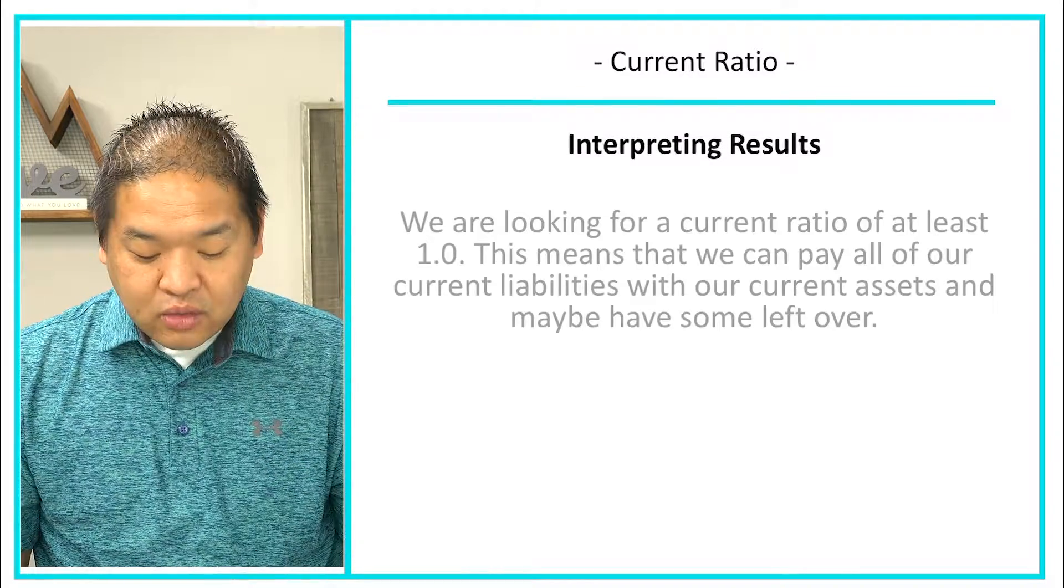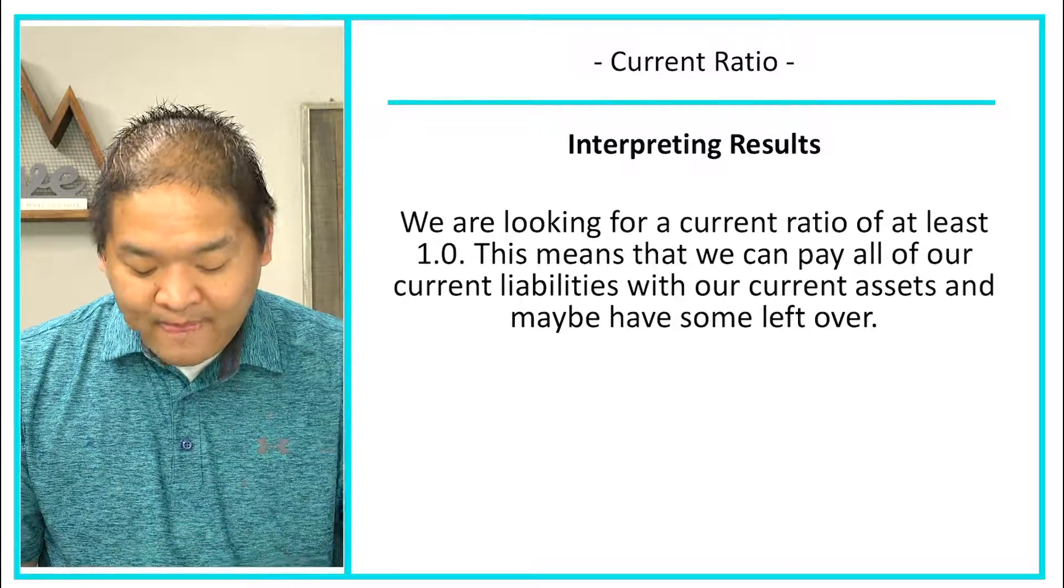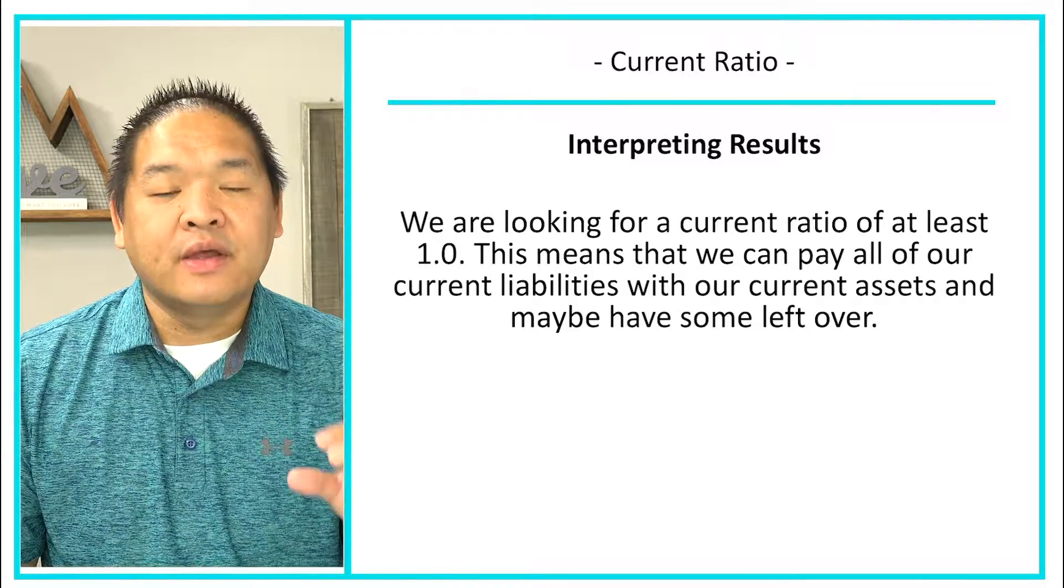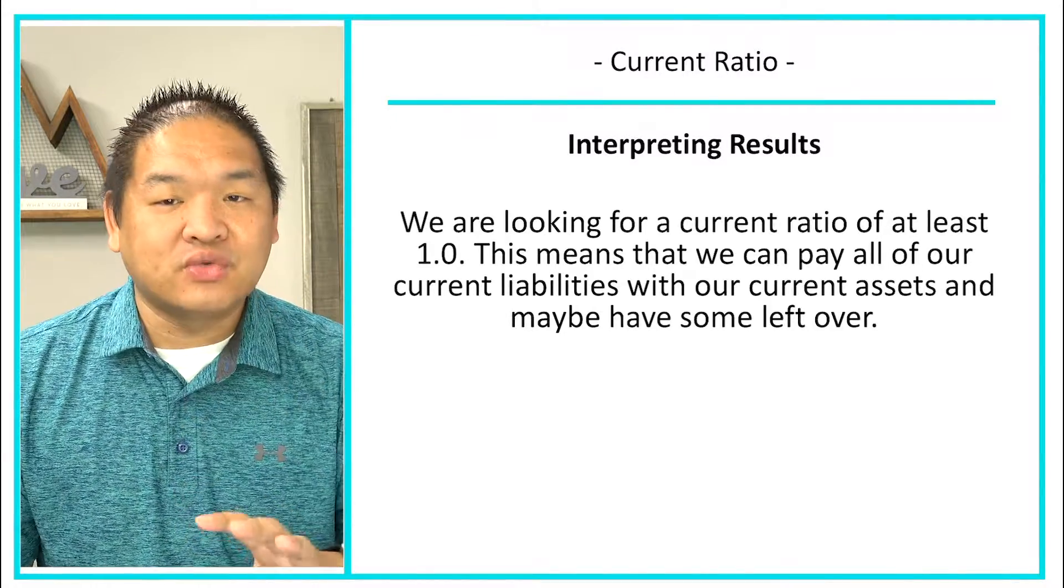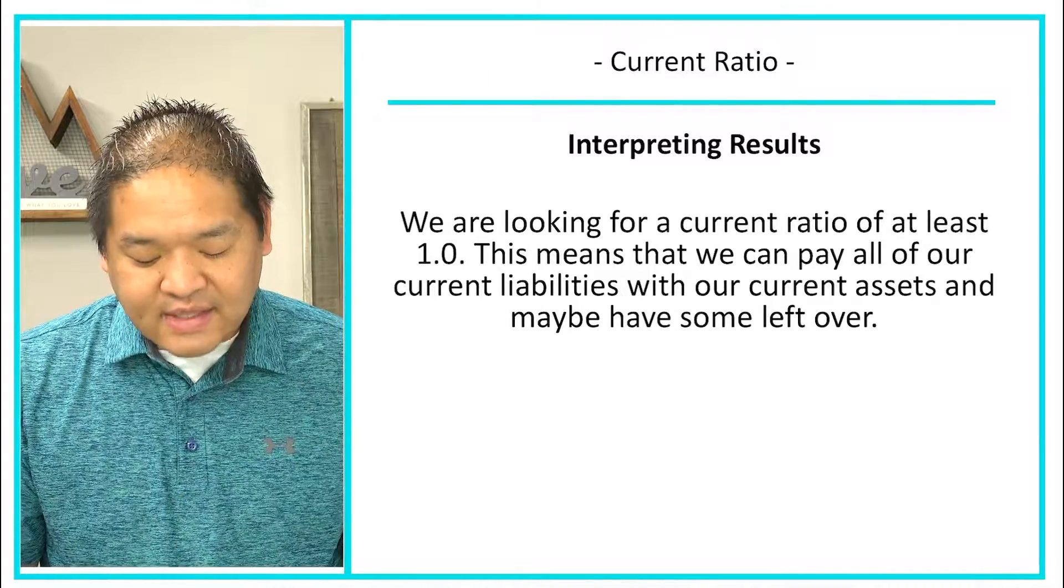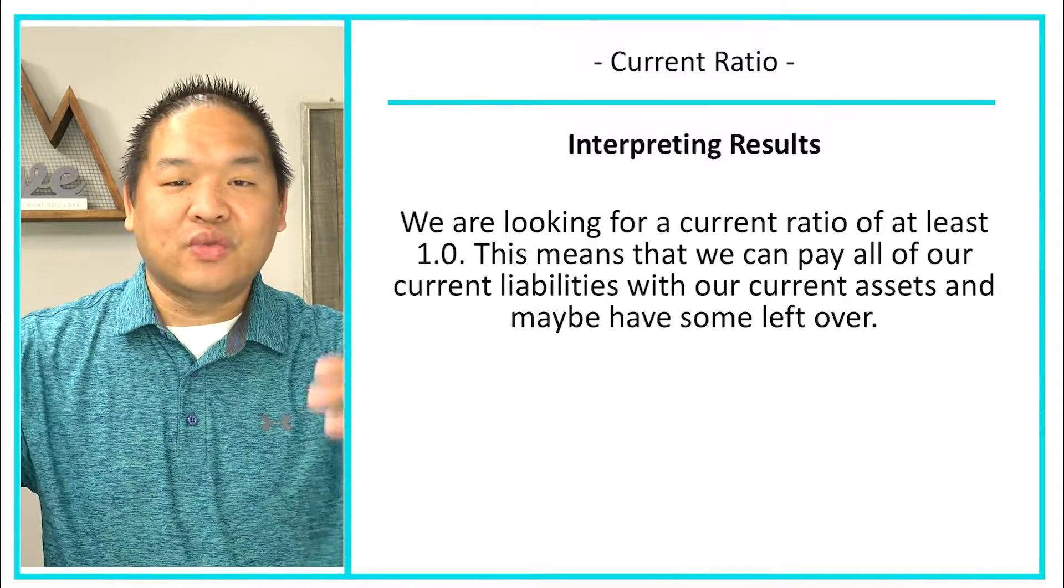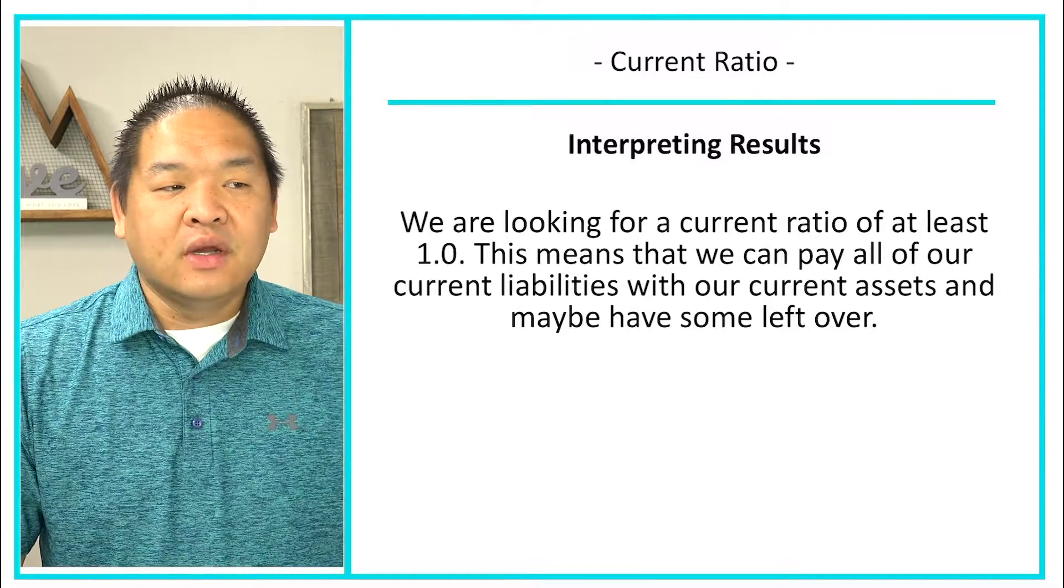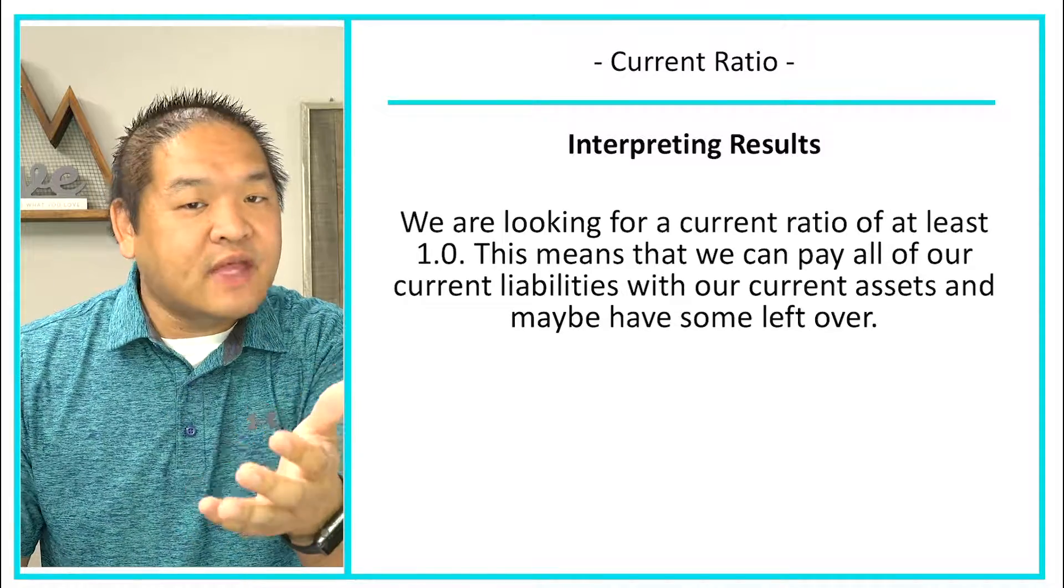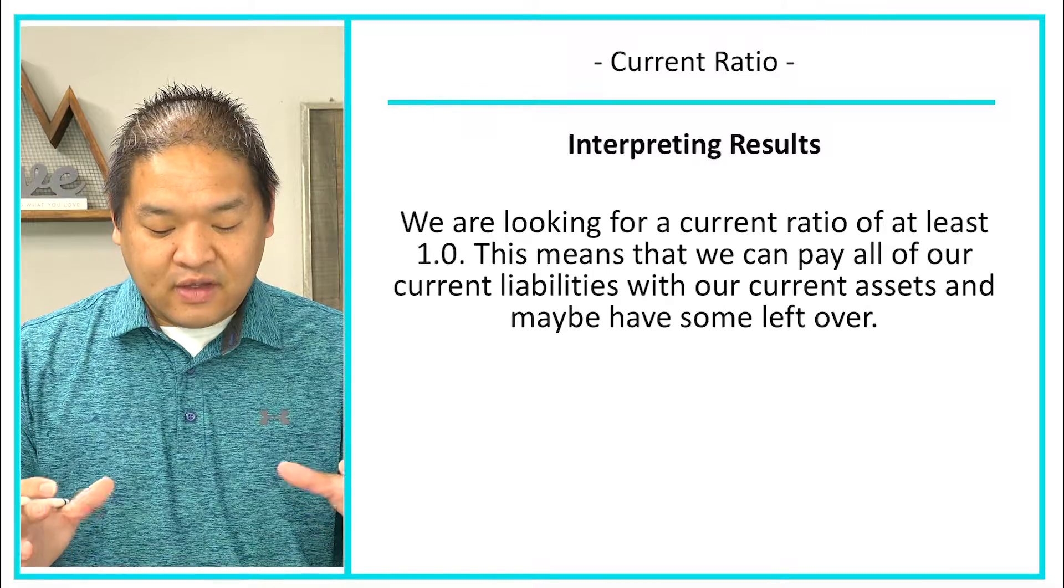What are we looking for? We are looking for a current ratio of at least 1.0. Does that mean you're doing bad if you don't have a 1.0? Not necessarily, but we want to see a 1.0 – that's like the best result we can get. This means we can pay all of our current liabilities with all of our current assets and maybe have some left over. Some would say, well don't you want more than one, like two, three, four? Sure, but most businesses don't, maybe because they're operating on a very lean scale. So if they can get to 1.0, that's a really good number in the eyes of current ratios.